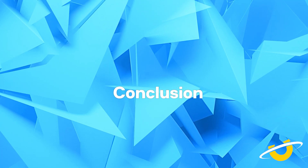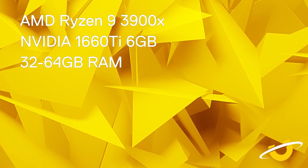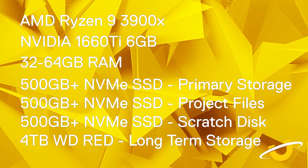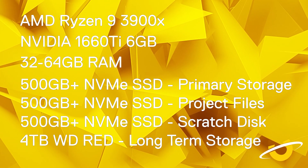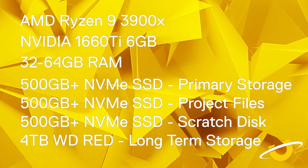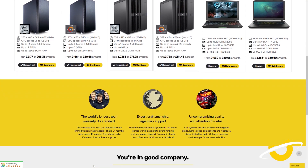To conclude, my ideal After Effects build for the best value against performance: AMD Ryzen 9 3900X, NVIDIA GTX 1660 Ti with 6GB, 32 to 64GB of RAM, and a bundle of storage drives generally leaning towards NVMe storage if your budget allows, with something like a Western Digital Red Drive for long-term storage. If you're interested in buying an After Effects workstation from Utopia, please check out our range in the link below. If you have any questions, drop me a comment, and if you haven't already, please hit subscribe. I'll see you on the next video — thank you everyone.